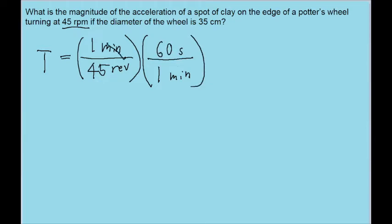So these minutes will cancel out. And the calculator will tell us that 1.333 repeated seconds is what the period is. Because in one revolution, it takes 1.333 seconds to spin around in one revolution. So that's one thing I want to figure out first.